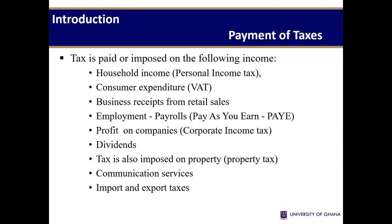Generally, tax payments are on various items. The tax may be imposed on the income of households — your personal income that you have earned. You need to pay tax on your personal income. Secondly, it may be on your consumption — the goods that you consume, i.e., consumer expenditure. So you pay tax on the goods you consume. Again, businesses upon receipt from sales are required to pay taxes. Also, from your employment income, such income may also be subjected to tax.